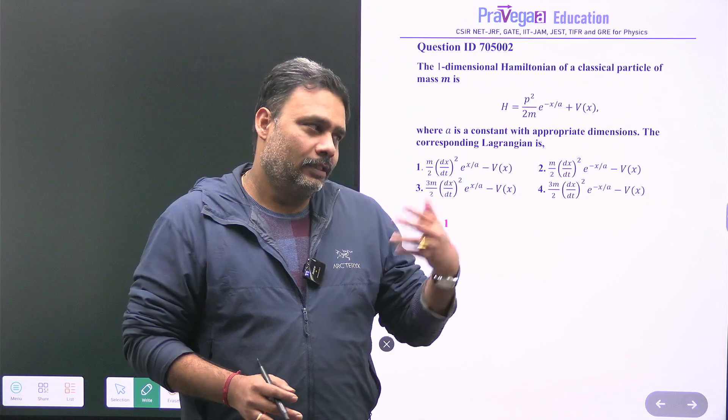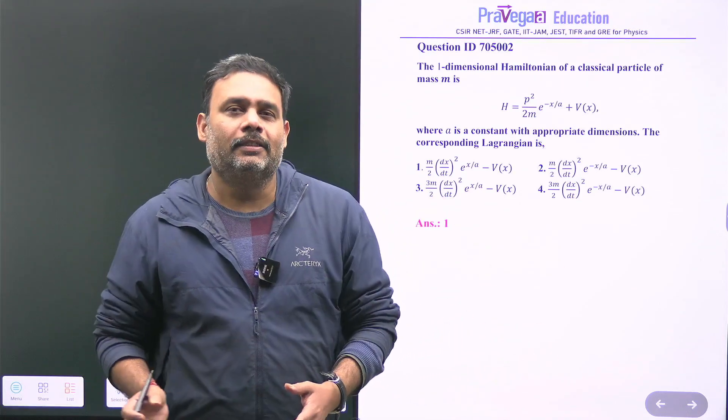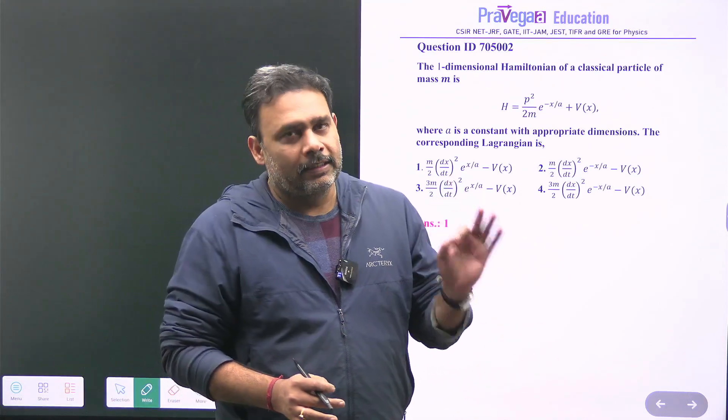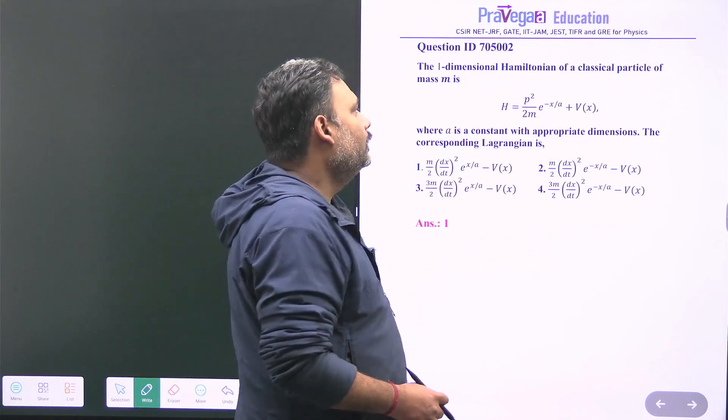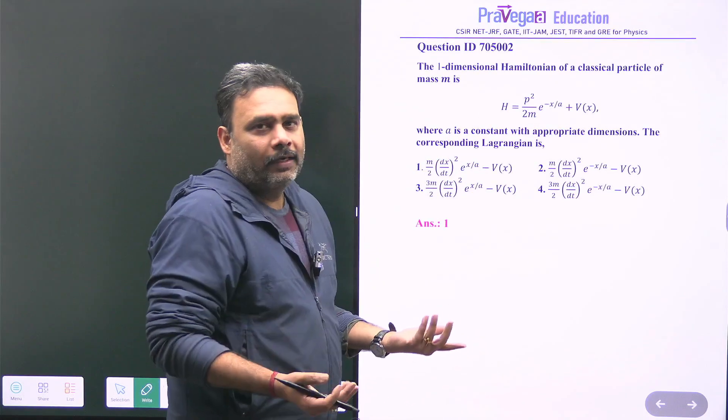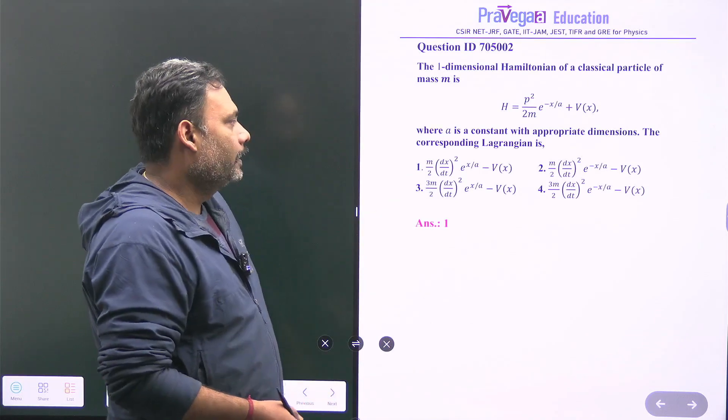Students, you need to solve each and every problem in a very methodical way. Whether that problem is the tougher one or the easier one, you have to go for step by step calculation. So this is very simple. The Hamiltonian is given in one dimension and you have to find the Lagrangian. So which one is the correct option?